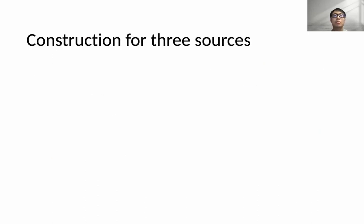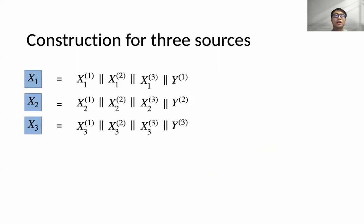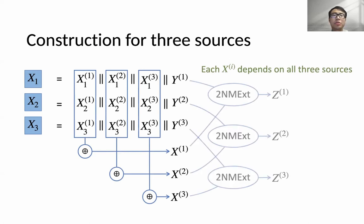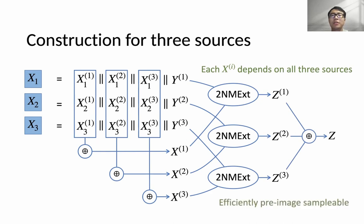Now I will introduce our main construction that bypasses this problem. Instead of parsing each source into two parts, we now parse each X_i into X_{i1}, X_{i2}, X_{i3}, and Y_i. Then we compute X^i by XORing the values in the i-th column. By doing this, each X^i depends on all three original sources, which means the previous attack will not work. The output Z is computed in the same way as in the previous construction. Following a similar idea, we can also show this construction is efficiently pre-image-sampleable.